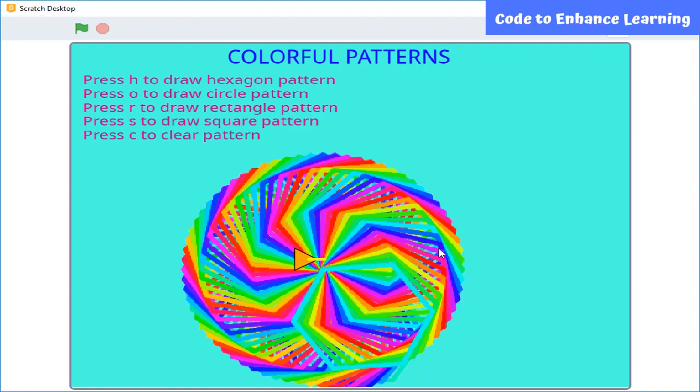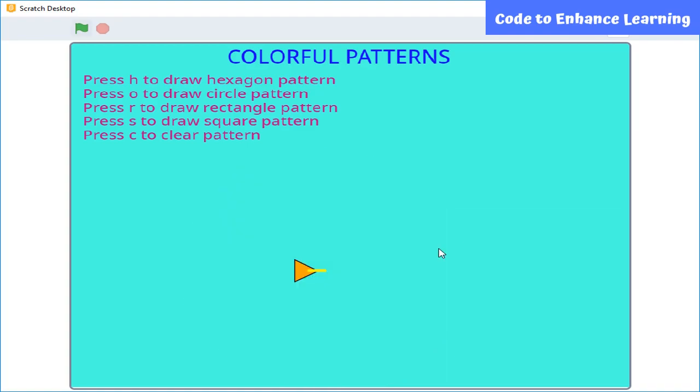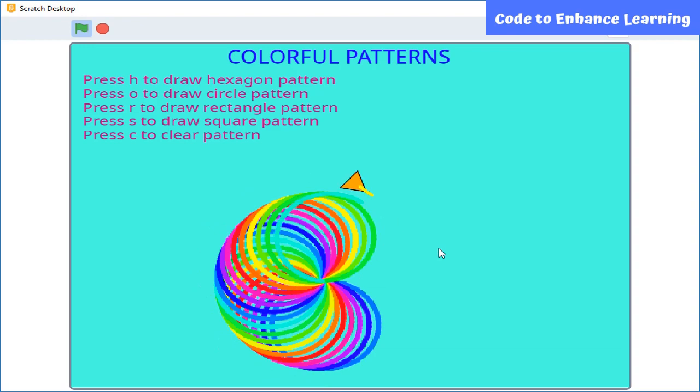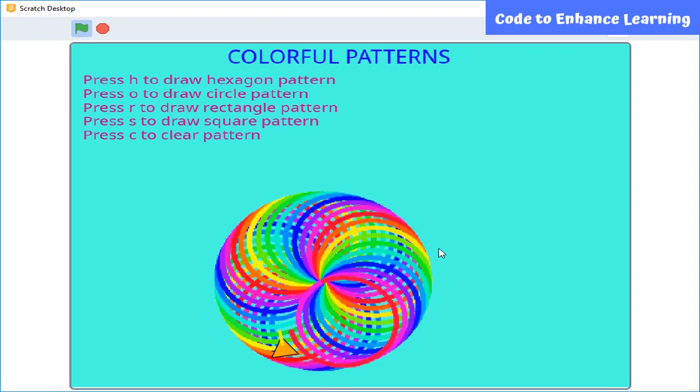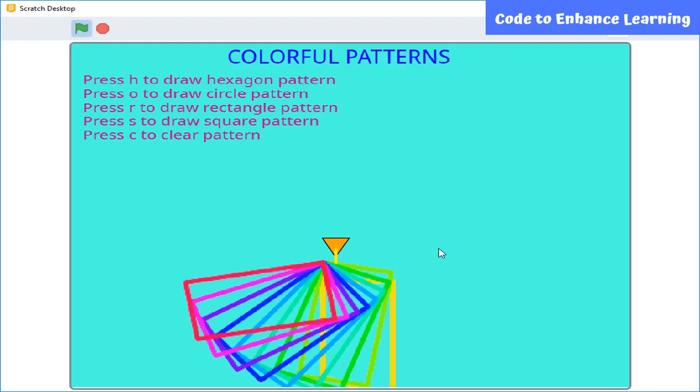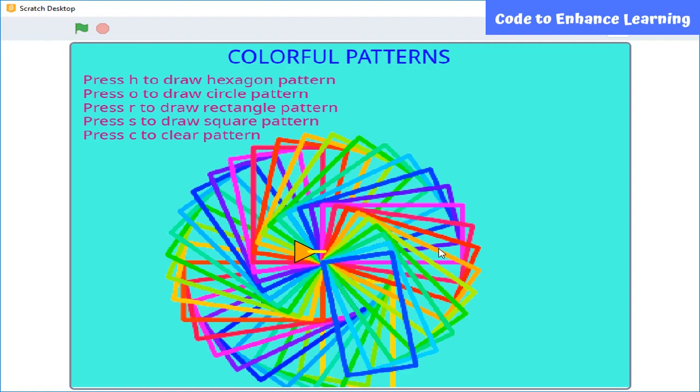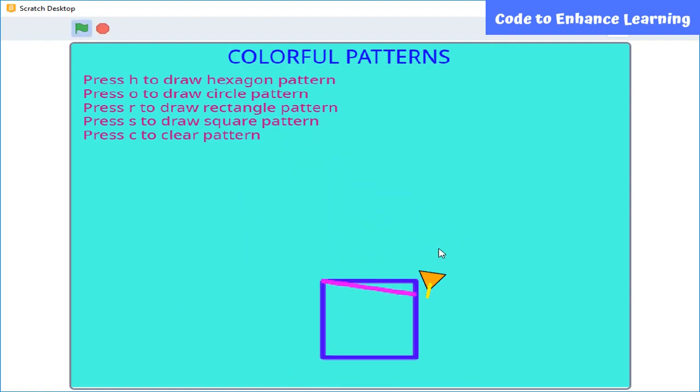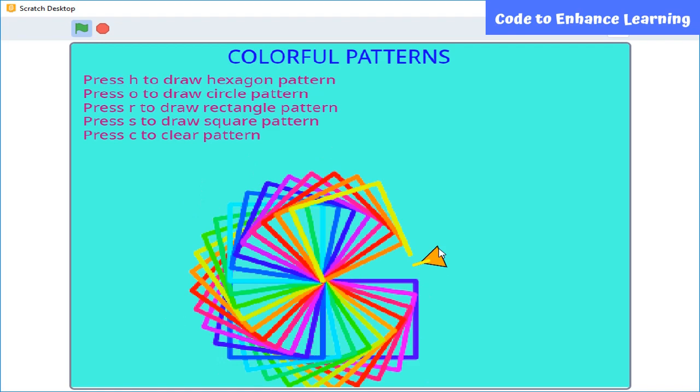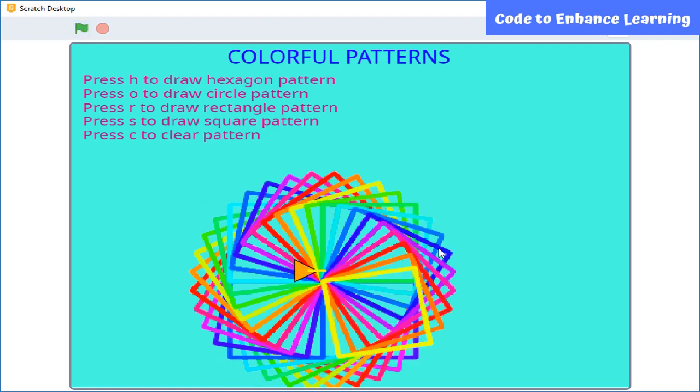Here you can see a hexagon pattern is formed. To clear this pattern, press C. Let's press O. A circle pattern is formed. Let's press R. A rectangle pattern is formed. Let's press S.